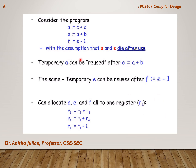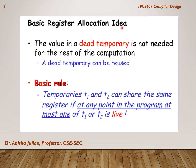Using six separate registers would be a waste. Instead, we look into the code and find out which variables will not be used henceforth, and reuse the registers. The basic register allocation idea is that the value in a dead temporary — a variable not needed for the rest of the computation — can be reused. Temporaries t1 and t2 can share the same register if at any point in the program at most one of t1 or t2 is live.